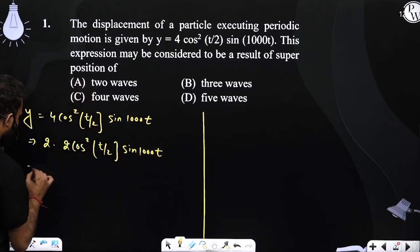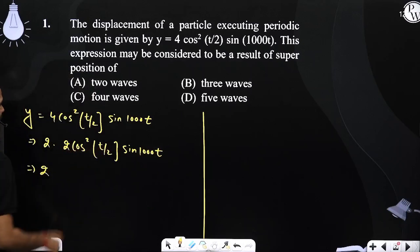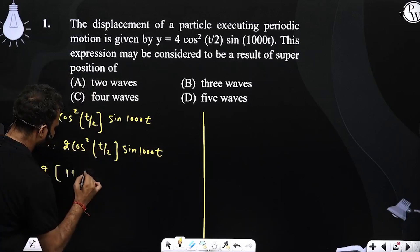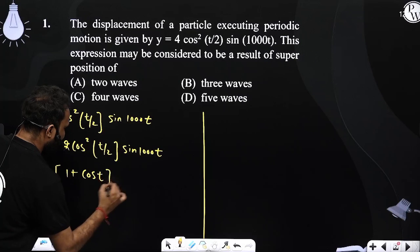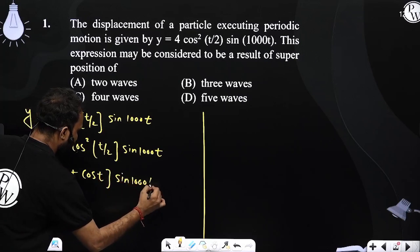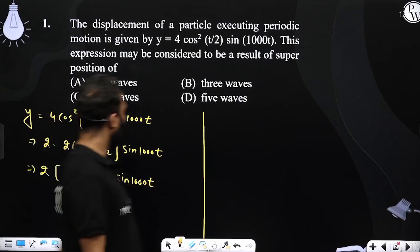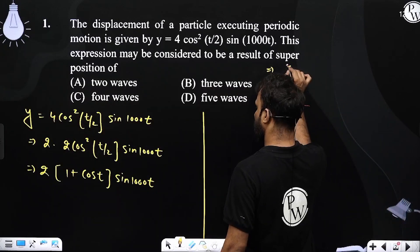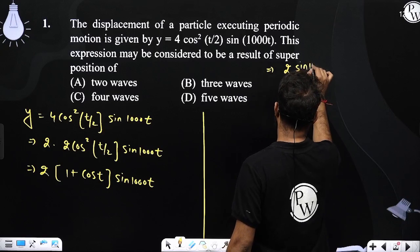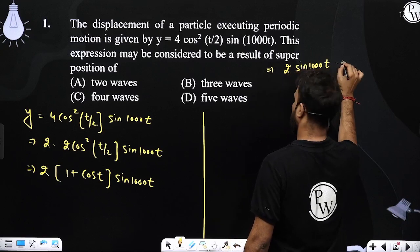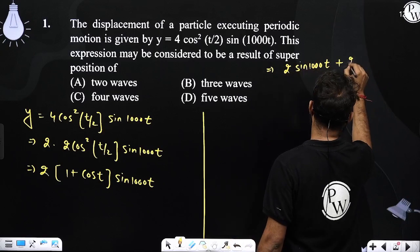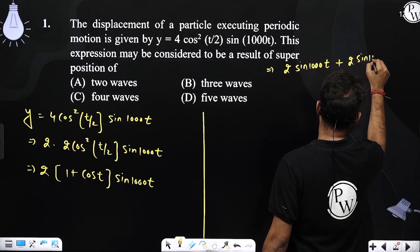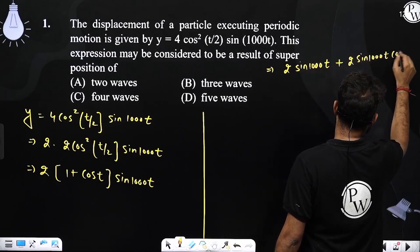Similarly, 2 cos square t by 2 we write as 1 plus cos t into sin 1000t. Now we can further simplify this as 2 sin 1000t plus 2 sin 1000t cos t.